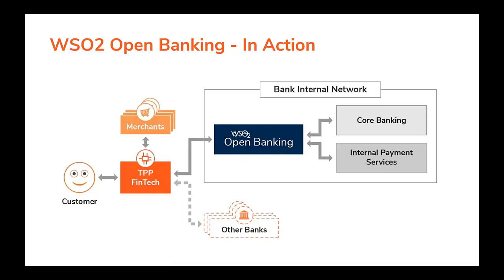As you see in this picture, within the bank network component, WS2 Open Banking Solution can connect to any core banking system or internal payment services through multiple protocols and message formats. What happens within the solution is it exposes those services in a highly secured manner to external parties such as AISP and PISP application owners, who can then use those exposed APIs to develop their services.